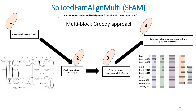At this final step, the connected components of the new graph obtained previously will be considered as candidate multi-blocks. We will compute the multiple splice alignment by progressively adding consistent multi-blocks. At the end of all four steps, we will get a multiple splice alignment.